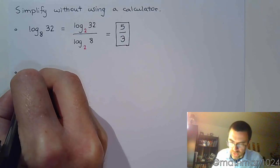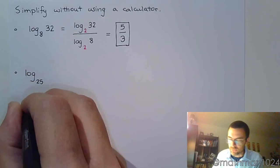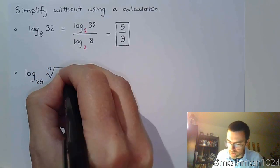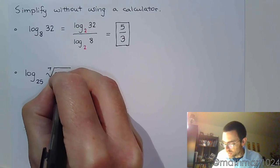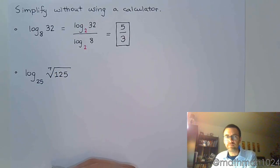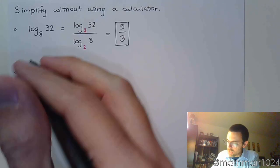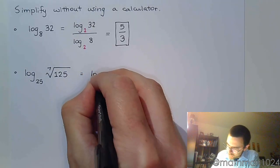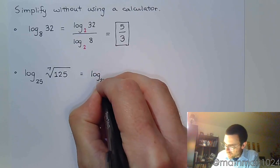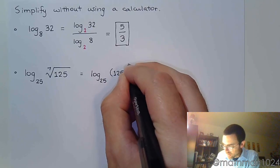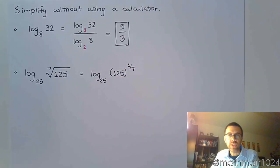Let's try this. Log base 25 of the 7th root of 125. Now one of the first things we notice here is that we have a radical. So we actually have several different ways of working this out. One of the first things that we can do is that we can rewrite this to say this is 125 to the 1/7th power.